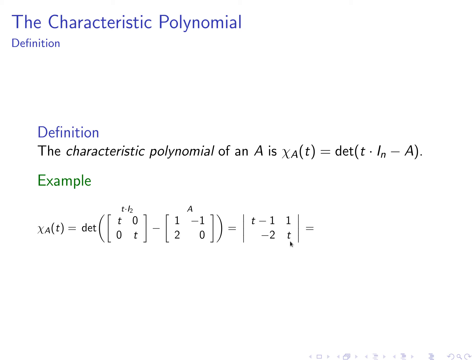When we do the subtraction, we end up with another two by two matrix. The columns of this matrix are t minus one, negative two, one, and t. Now we're taking the determinant of this two by two. We multiply the diagonal entries together and then subtract off the product of the other two entries. So we get t minus one quantity multiplied by t, then minus negative two times one, which is plus two. Distributing gives t squared minus t, so the characteristic polynomial is t squared minus t plus two.